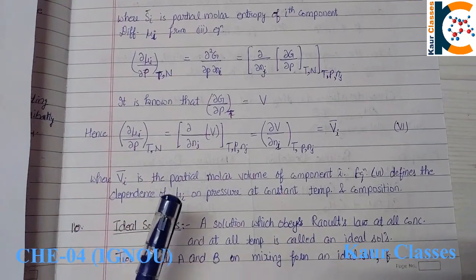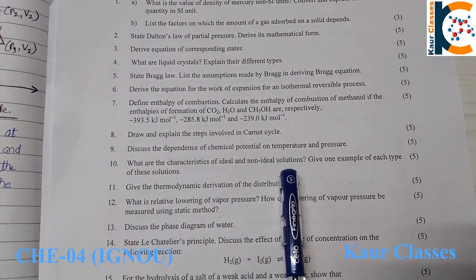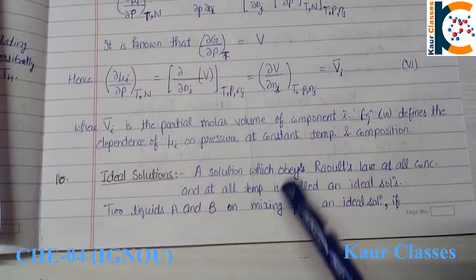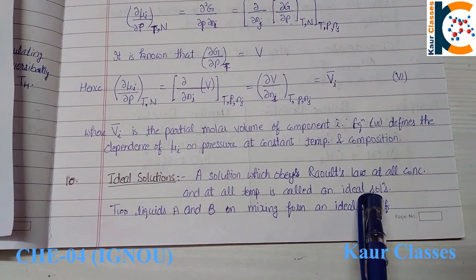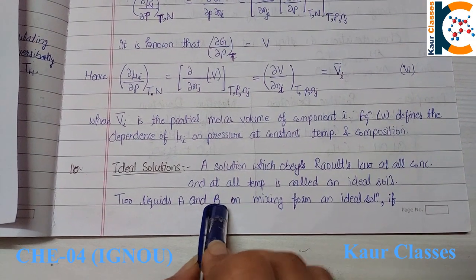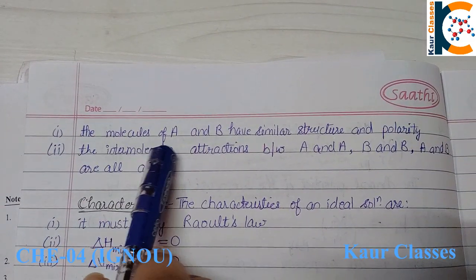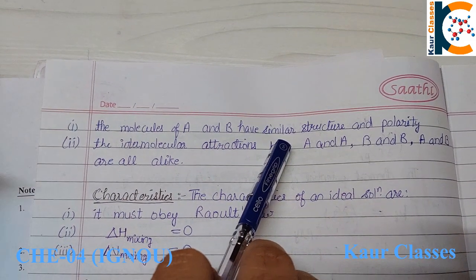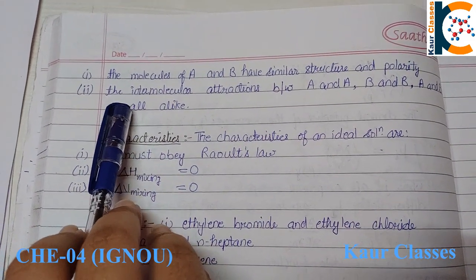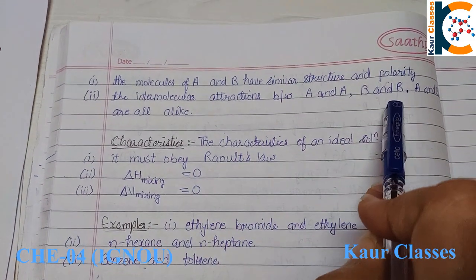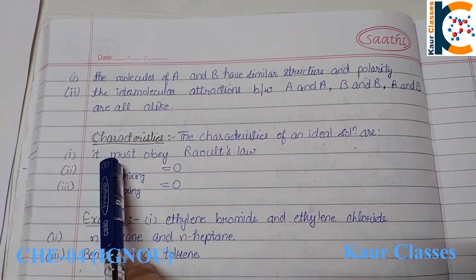Question 10: write the characteristics of ideal and non-ideal solutions with one example each. An ideal solution is one that obeys Raoult's law at all concentrations and temperatures. For example, two liquids A and B can form an ideal solution only if the molecules of A and B have similar structure and polarity, and if the intermolecular attractions between A-A, B-B, and A-B are alike.